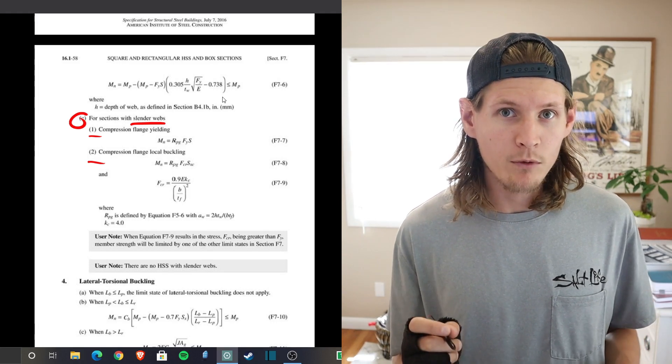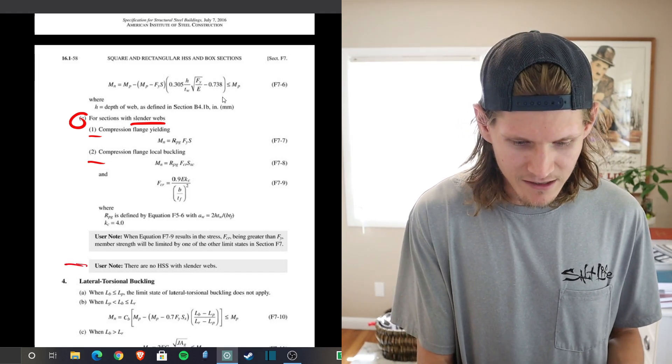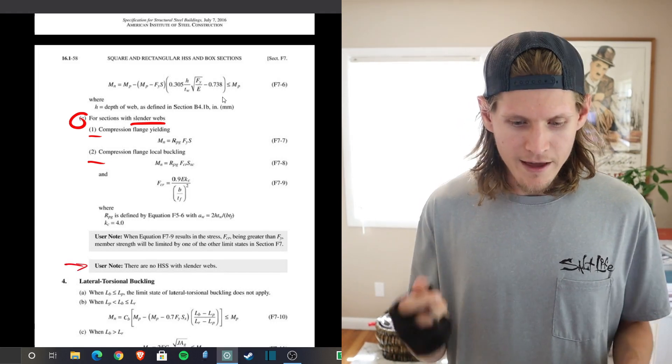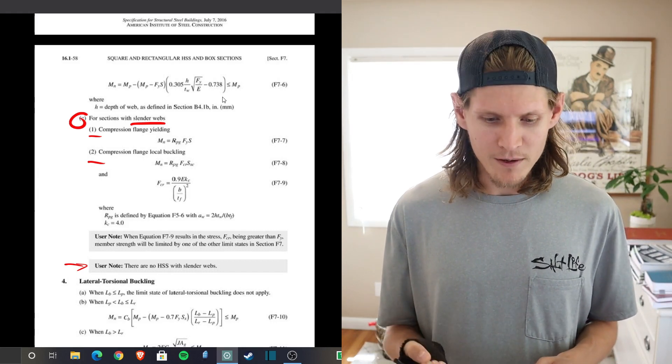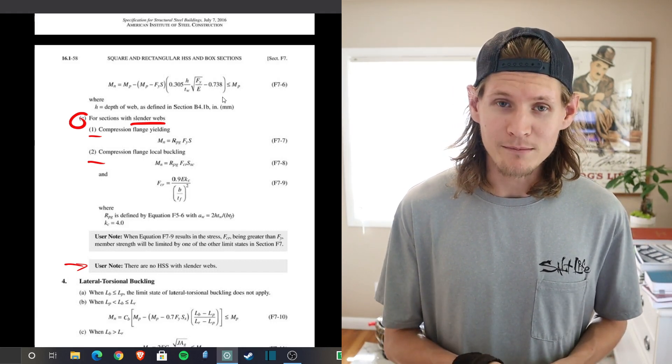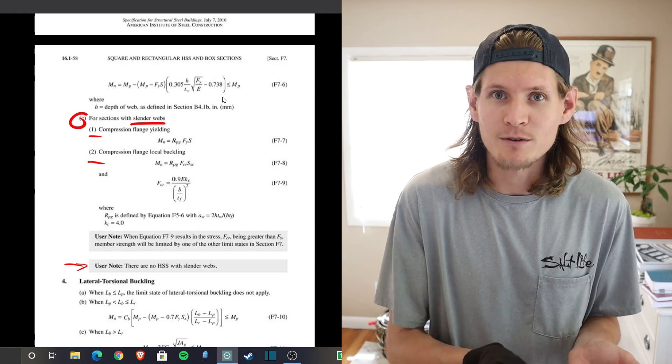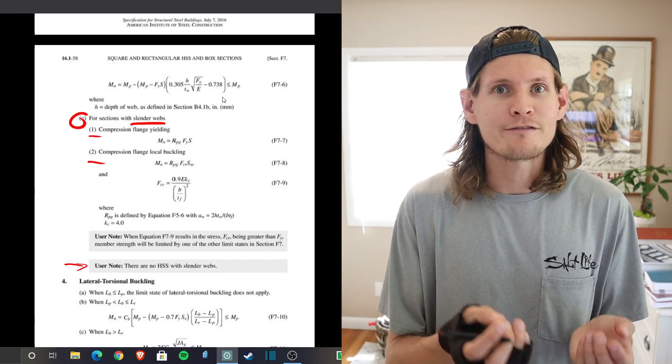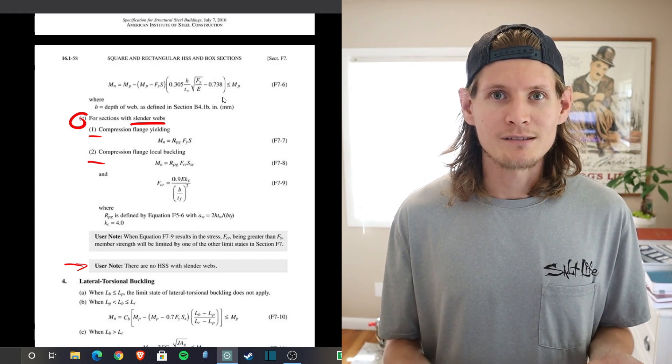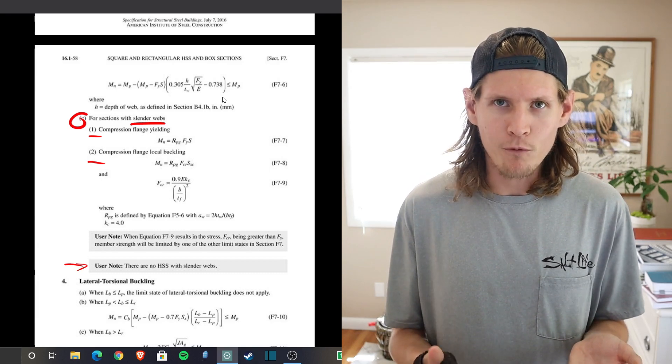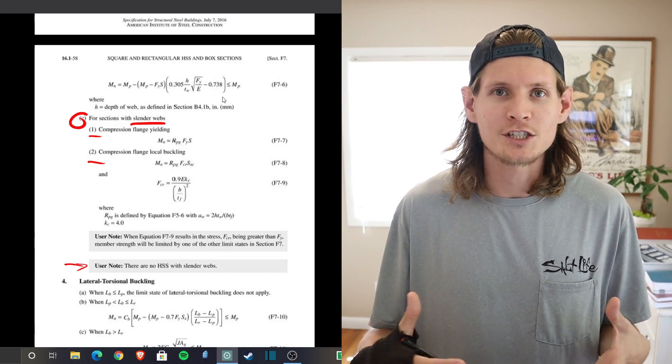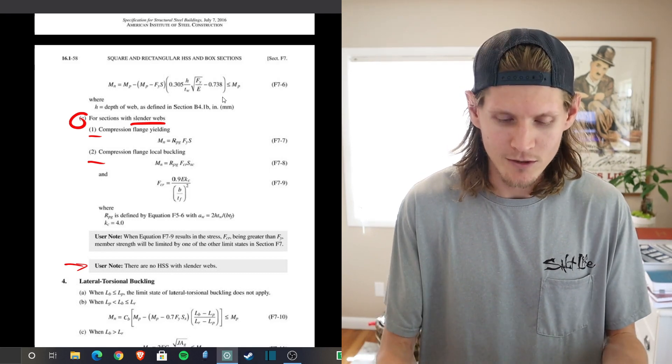The last thing I want to specify with web local buckling you will see they give it in the user note is that there are no HSS members with slender webs. So you would never need to check this if you were doing a factory issued HSS member. That would only apply then for those custom box shapes.